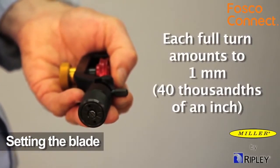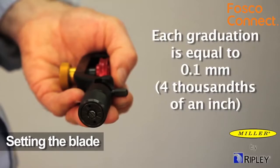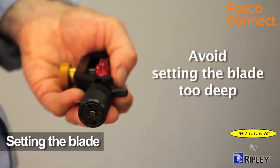Each full turn of the adjusting knob amounts to about 40 thousandths of an inch of blade depth adjustment. In turn, each graduation is equal to four thousandths of an inch of blade adjustment. Avoid setting the blade too deep in order to protect underlying layers.